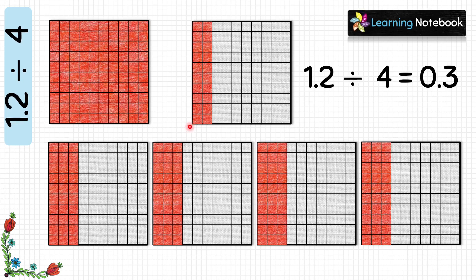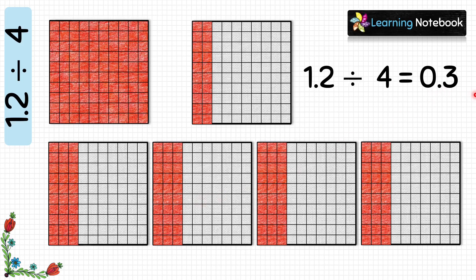So the answer is: how many tenths are there in each group? There are 3 tenths in each of the groups. Therefore the answer is 0.3. So 1.2 divided by 4 equals 0.3.